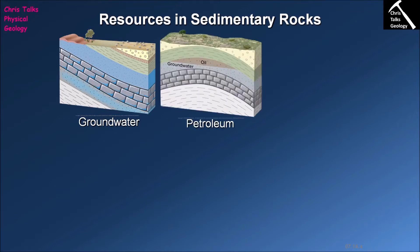Another resource commonly found in sedimentary rocks is petroleum — oil and gas. In order to form petroleum you need a source rock, and that source rock has to have a large amount of organic material in it, because it's essentially the cooking of this organic-rich layer of rock which produces the hydrocarbons or natural gas that we then pump out of the ground and use. This grey layer here represents our source rock, where the oil or gas is forming.